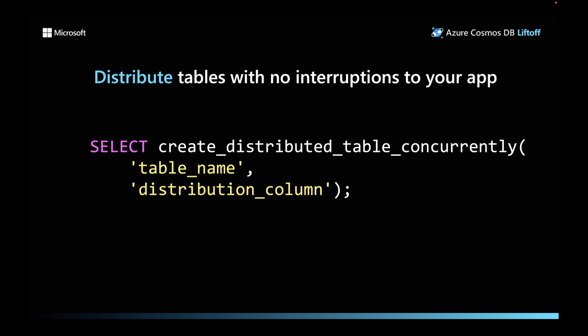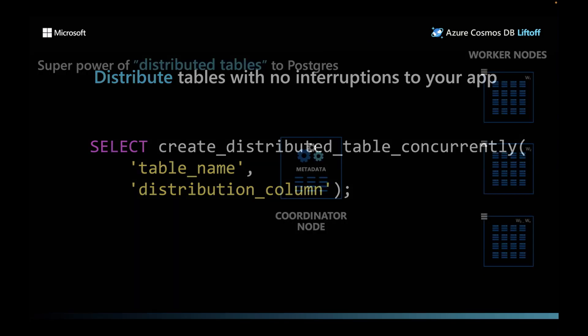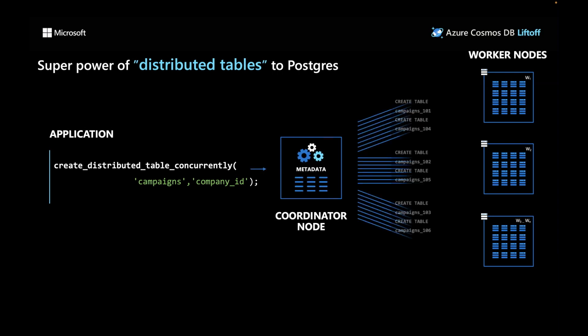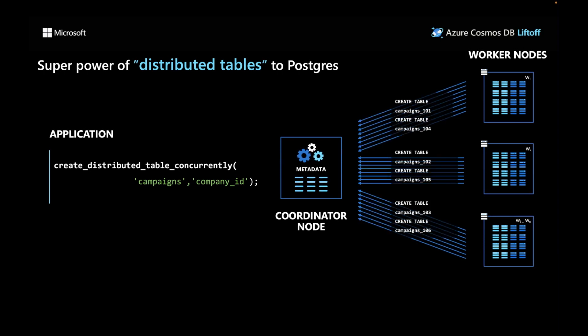Let's learn more about what distributing tables actually does under the covers. In a multi-node deployment, there are two types of nodes: the coordinator node and worker nodes. Coordinator and worker nodes are nothing but plain Postgres databases with the Citus extension loaded. Your application connects to the coordinator node and interacts very similarly to how it does with Postgres. The coordinator node is responsible for distributed planning, while the worker nodes are where the actual data and computation live.